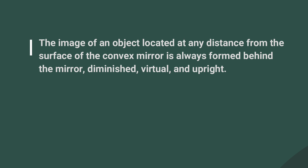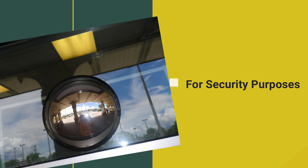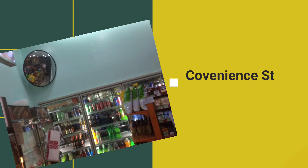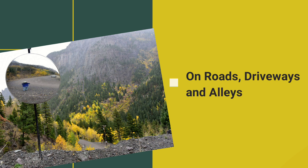Common uses of the convex mirror include: rear-view mirrors in automobiles and vehicles because they give a wider field of view, enabling drivers to see what is behind the vehicle; security mirrors placed near ATMs so bank customers can check if someone is behind them; convex mirrors on the ceilings of convenience stores or department stores for security personnel to view a wide area; and convex mirrors placed at curves, turns, driveways, and alleys on roads to improve visibility.